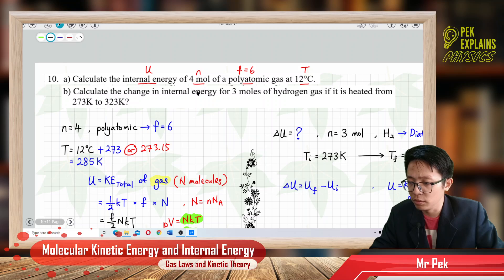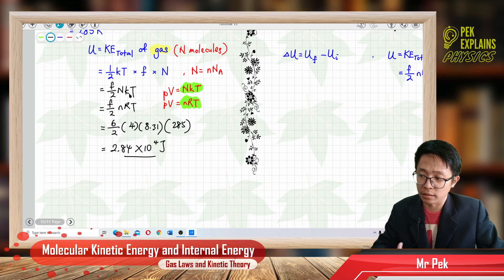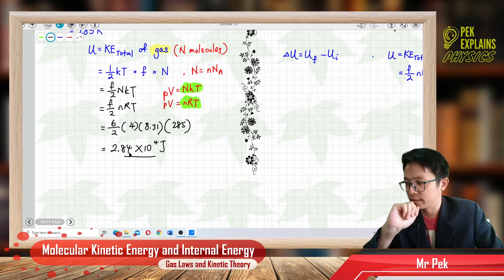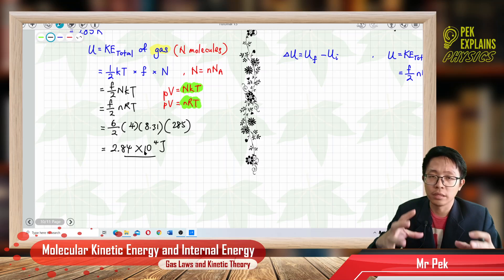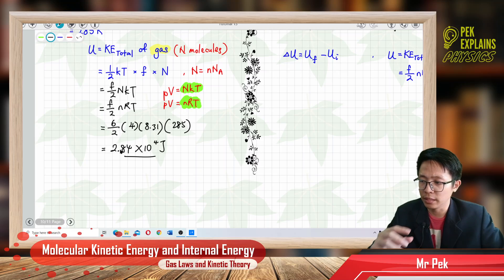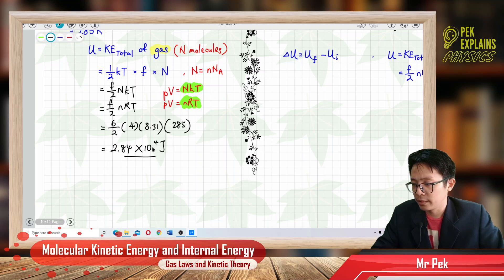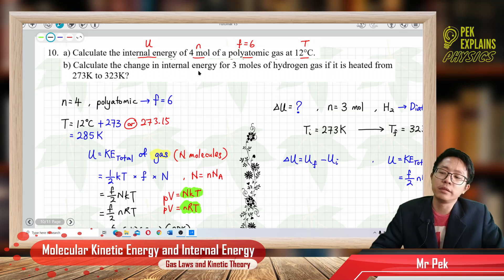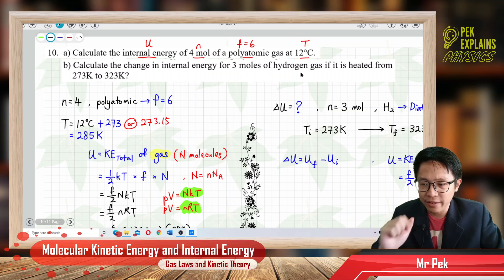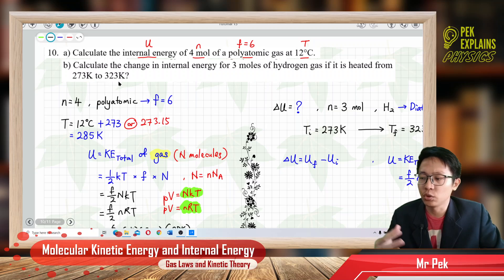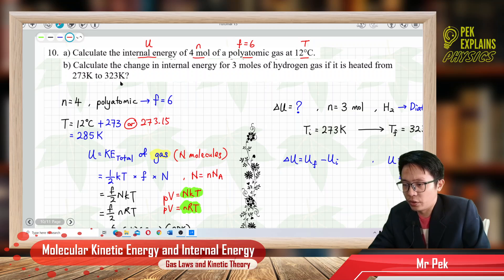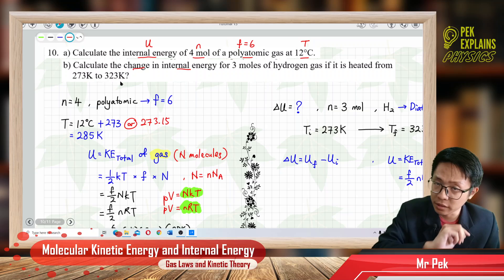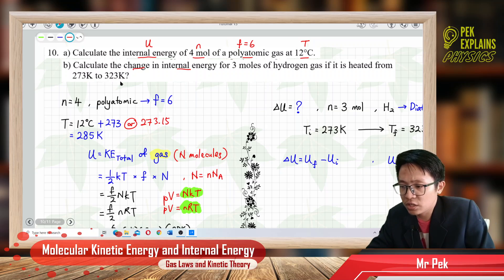We used the formula F over 2 times nRT, because we have the number of moles — 4 moles. nRT is the same as NKT, or also the same as PV. This is the internal energy of the whole gas, which has total N molecules, or total n number of moles. Now the next question: Calculate the change in internal energy for 3 moles of hydrogen gas if it is heated from 273 Kelvin to 323 Kelvin. The question asks for the change — be careful. Change of internal energy is delta U.